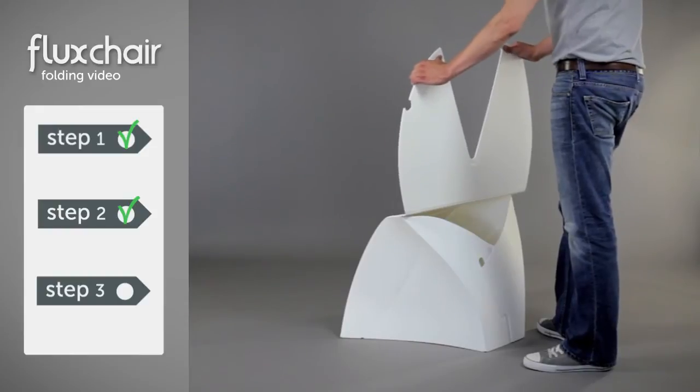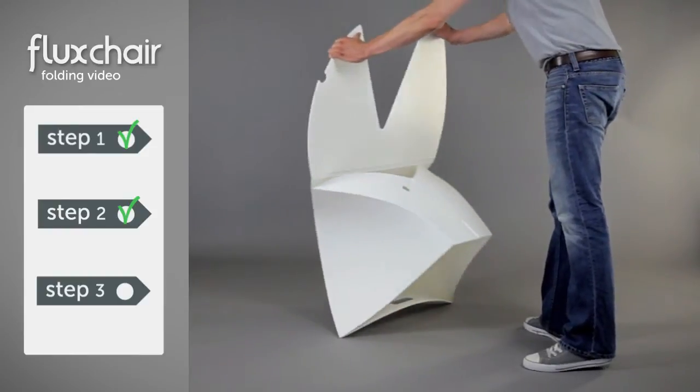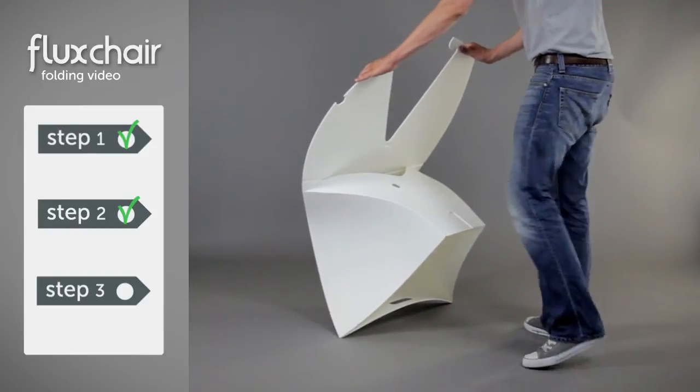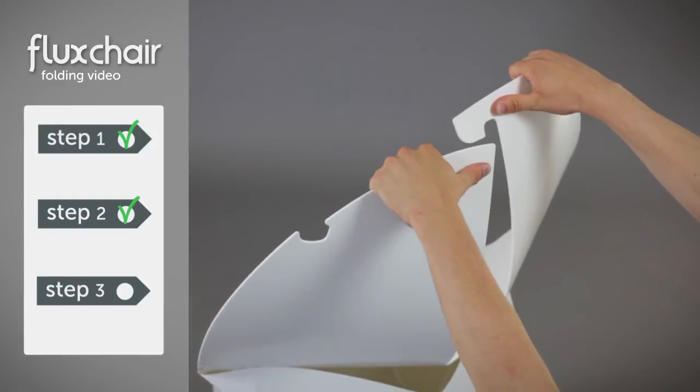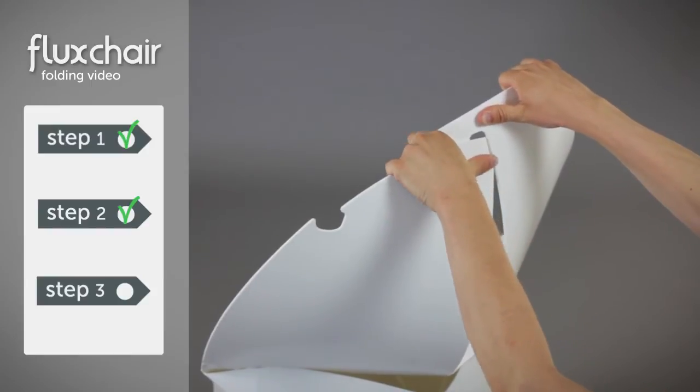Now pay attention to where Tom places his hands and tilt the chair forwards. Now here comes the tricky part. Use your thumbs to control the panels and slide the left part through the hook from the back to the front.